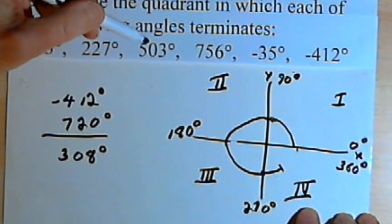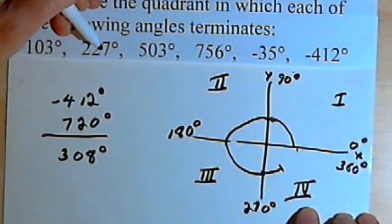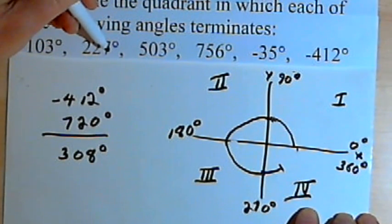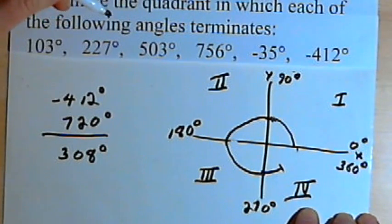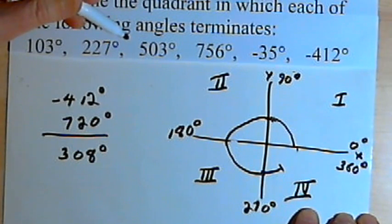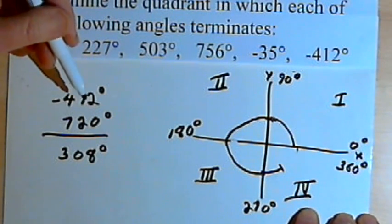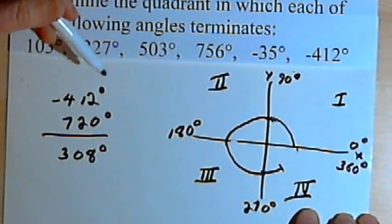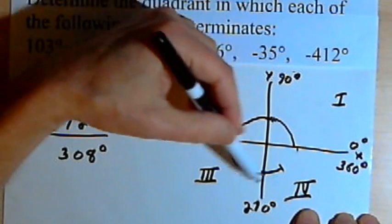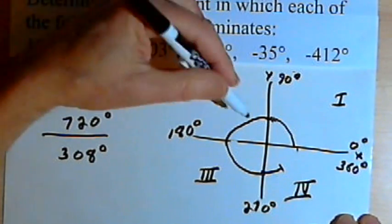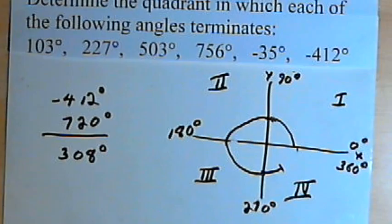The general principle: if you have a positive angle greater than 360 degrees, subtract a multiple of 360 so you end up with a positive number between 0 and 360. If you have a negative angle, add a multiple of 360 so you end up with a positive angle between 0 and 360. Then use the coordinate plane — or visualize it — to determine which quadrant the angle terminates in.